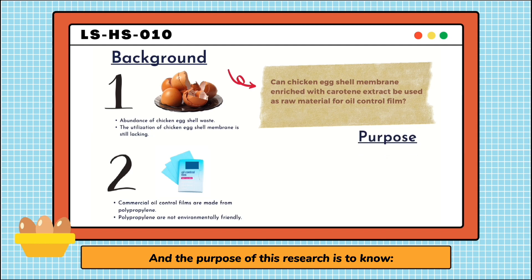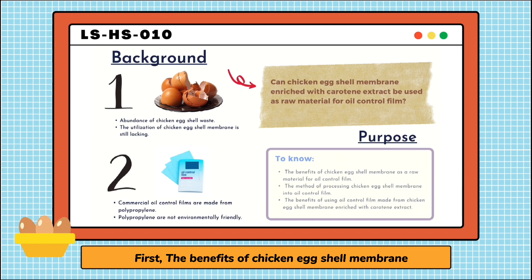The purpose of this research is to know, first, the benefits of chicken eggshell membrane as raw material for oil control film. The second one is the method of processing chicken eggshell membrane into oil control film. And the last one is the benefit of using oil control film made from chicken eggshell membrane enriched with carotene extract.